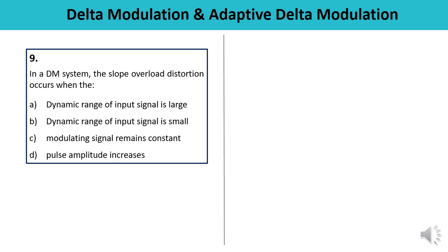Question 9: In a DM system, slope overload distortion occurs when — the dynamic range of the input signal is large, dynamic range is small, the modulating signal remains constant, or pulse amplitude increases? Slope overload distortion arises because of the large dynamic range of the input signal. When the input signal amplitude increases a lot but the step size is too small and fixed for the staircase signal, it cannot follow accordingly. So the answer is A.